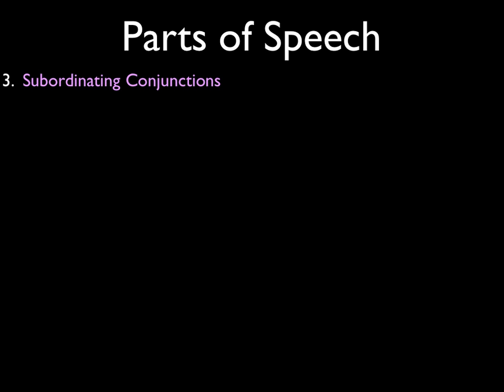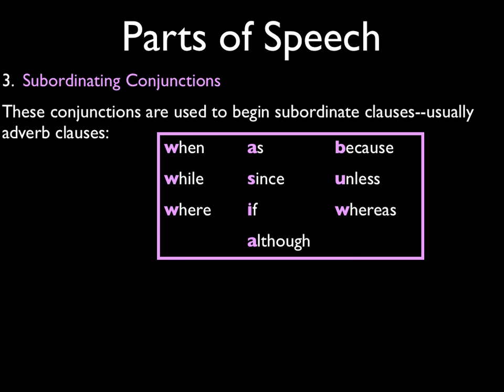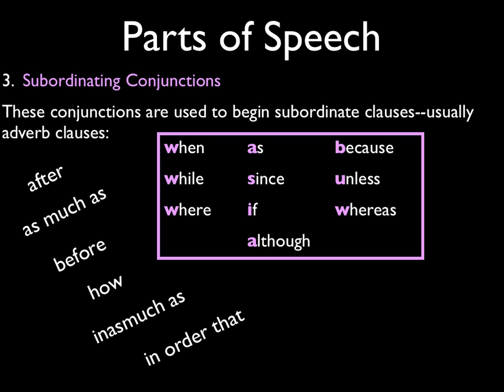Then there are subordinating conjunctions. This is where you have an independent clause — a sentence that can stand by itself — and another clause that can't stand by itself and helps to support the first one; thus it is subordinating: it comes under the main clause. A lot of these you are already familiar with from the www.asia.buw pattern: when, while, where, as, since, if, although, because, unless, whereas. But there are more: after, as much as, before, how, in as much as, in order that, provided, than, though, and until. All of these words could begin a clause that would be subordinate.